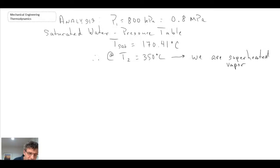So the first question asked us to determine the initial temperature T1. Well, we just obtained that by getting the saturation temperature. So we can write T1 equals 170.41 degrees Celsius. Now the second thing they want us to determine is the total mass of the system.